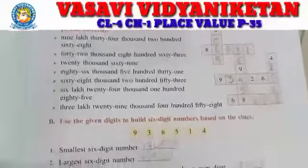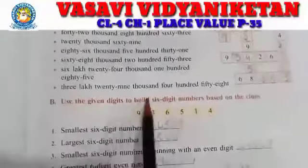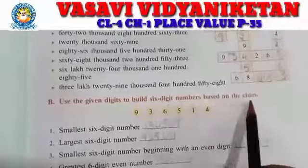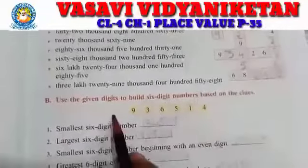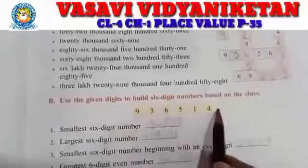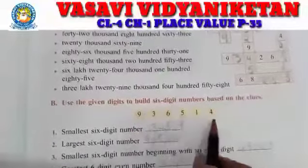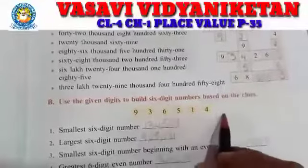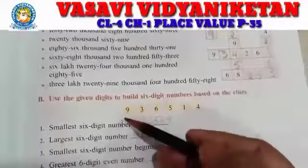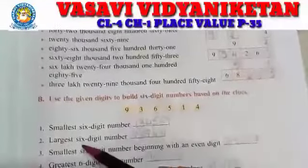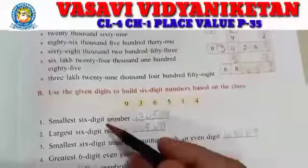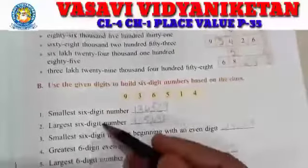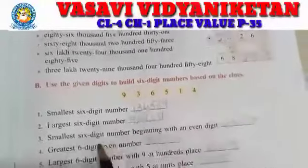Next, Part B - Roman. Use the given digits to build 6-digit numbers based on their clues. They have given 6 digits, so with the help of these digits we have to form the smallest 6-digit number and the largest 6-digit number.